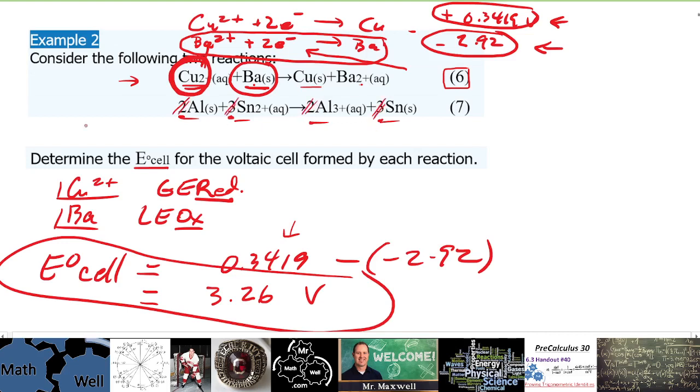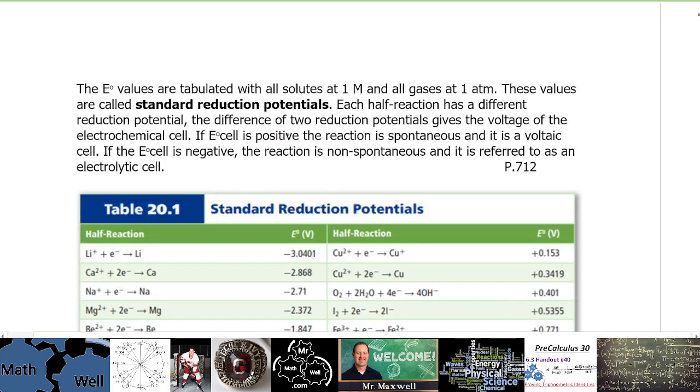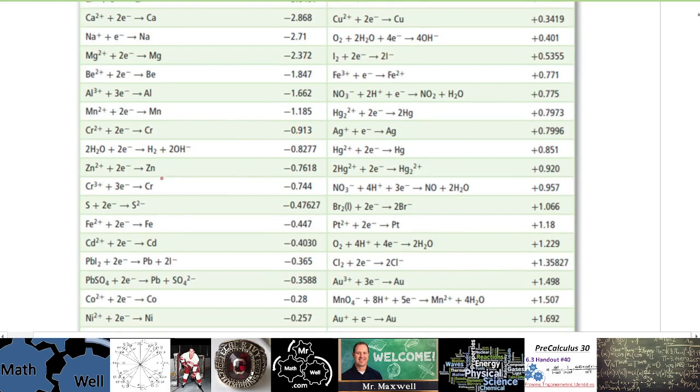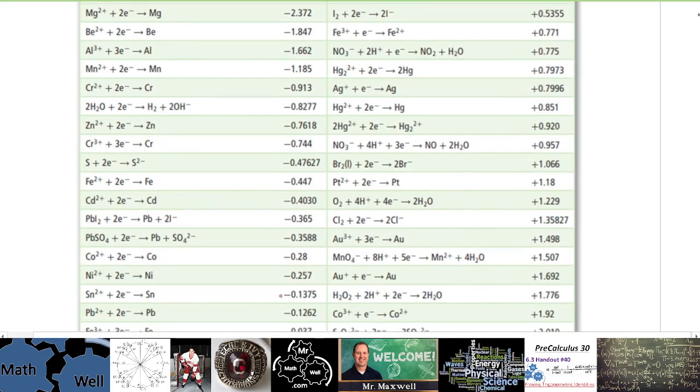So no, you do not worry about the balanced coefficients here, you just use the cell potentials from the chart. So what you should have noticed was that tin is down here and aluminum on your chart is up here.